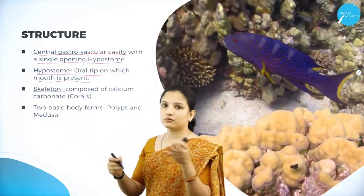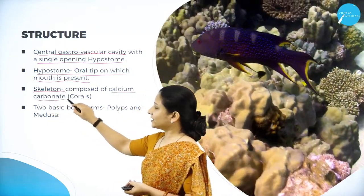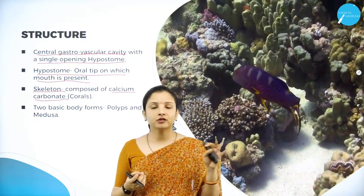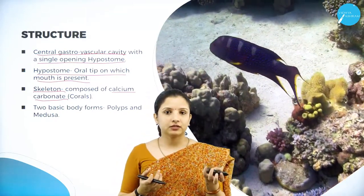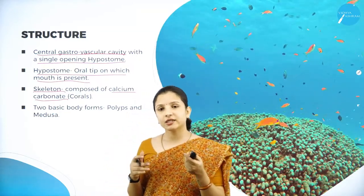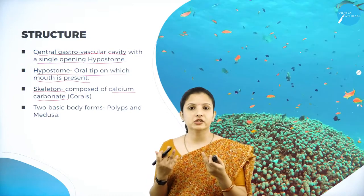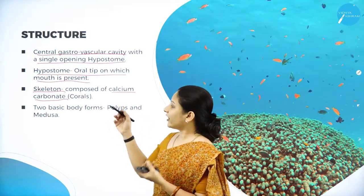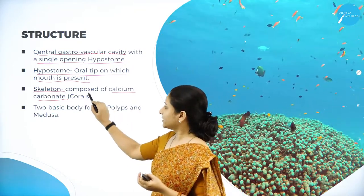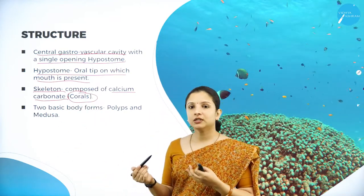When it comes to the skeleton, it is composed of calcium carbonate. The best example is corals. Corals are soft underwater, but when taken out of the water and exposed to the external environment they become very hard. Why? Because they contain calcium carbonate. The skeleton is made up of calcium carbonate. Corals also come under the Cnidarians.